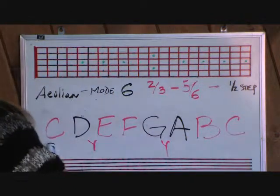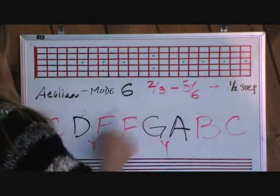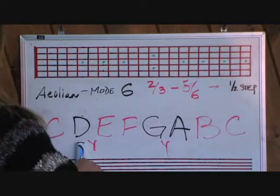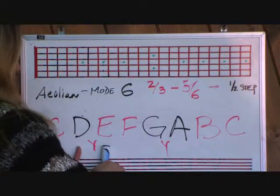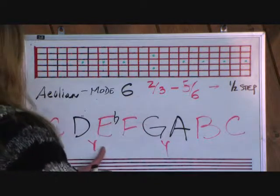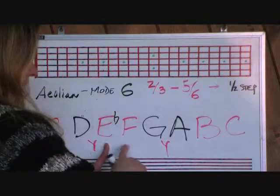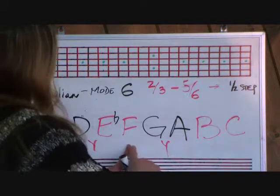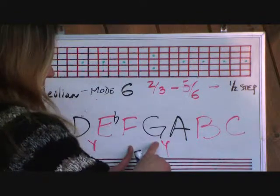This is the C Aeolian mode 6. We're going to apply the sharps and flats so it matches the formula. The first step, C to D, is a full step, so we don't need to do anything. Second to third step, D to E, is a full step and it needs to be a half, so we're going to apply the flat there. Third to fourth, E flat to F, needs to be a full step — so we move on. Fourth, F to G, to the fifth, needs to be a full step — F to G is a full step, so we move on.